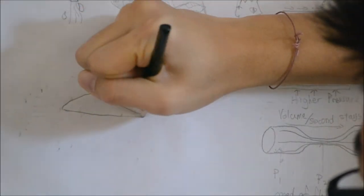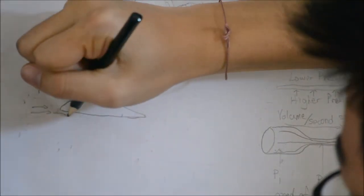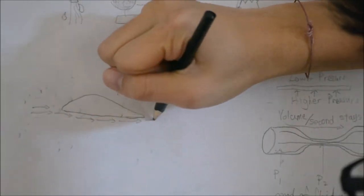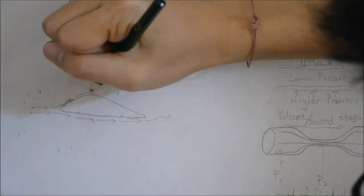The wing of an aircraft works on the same principle. The wing of an aircraft is shaped and tilted so that the air moving over it travels faster than the air moving underneath.